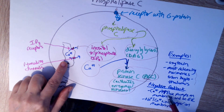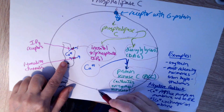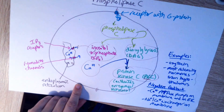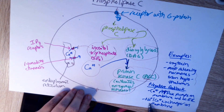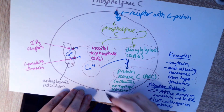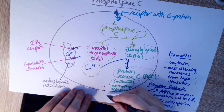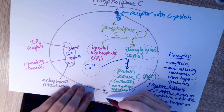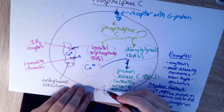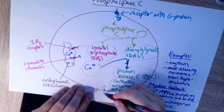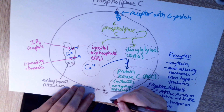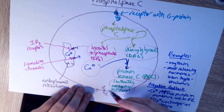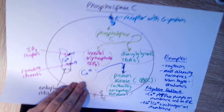The negative feedback for the phospholipase C system involves getting calcium out of the cytoplasm. Without calcium, diacylglycerol can't activate protein kinase C. So you need to get calcium either out of the cell or back into storage in the endoplasmic reticulum. There are ATP pumps for calcium on the cell membrane and on the endoplasmic reticulum. There's also a sodium-calcium exchanger on the cell membrane — calcium goes out of the cell and trades with sodium going in, the energy provided by sodium's tendency to enter the cell. This is a counter-transport mechanism.